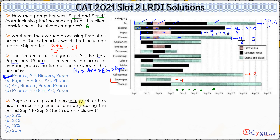The last question asks: approximately what percentage of orders had a processing time of 1 day during September 1 to September 22? First, we count total orders: arts 5, binders 4, paper 3, phones 3, appliances 2, bookcases 3, fasteners 3, furnishing 2, labels 2, tables 2, chairs 2, accessories 1, envelopes 1, storage 2. Total = 35 orders.